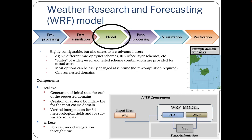Next we have the model integration step, using the Weather, Research, and Forecasting, or WARF model. This model is highly configurable, but can also cater to less advanced users. There are a number of schemes and suites that can be used, and most options can be easily changed at runtime, and it can also run using nested domains. There are two components: the REAL program and WARF program. The REAL program generates the initial state and lateral boundary conditions and performs vertical interpolation for the 3D meteorological fields and soil data. The WARF program performs the actual model integration through time.